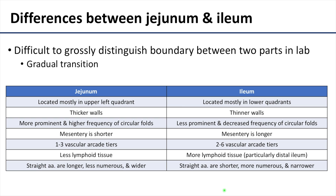There is no grossly visible line of demarcation between the jejunum and the ileum, but there are observable differences that are often more pronounced in the more proximal portions of the jejunum and the more distal portions of the ileum. For the most part, the jejunum is located in the left upper quadrant, while the ileum is going to be in the lower quadrants, particularly the lower right quadrant. The walls of the jejunum are going to be thicker and importantly they're going to have a higher frequency of circular folds on the inside portions than what you'll have with the ileum.